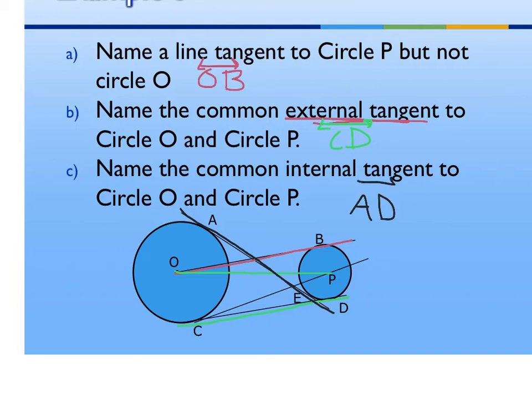When would you use line PC? That question would ask when a line is tangent to circle O but not tangent to circle P.